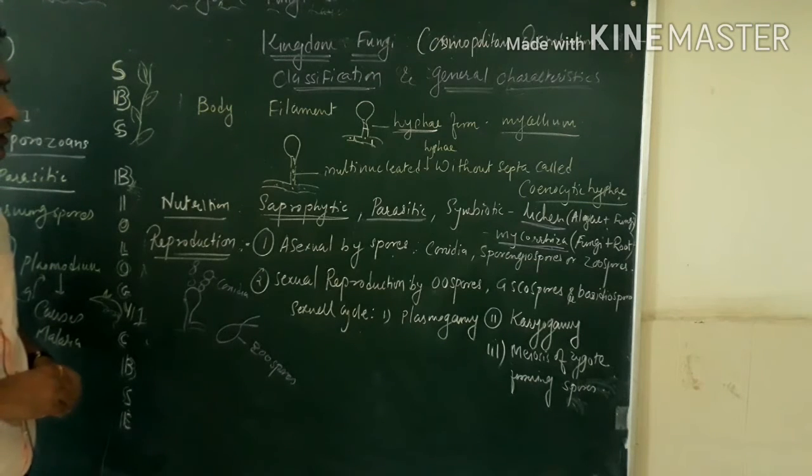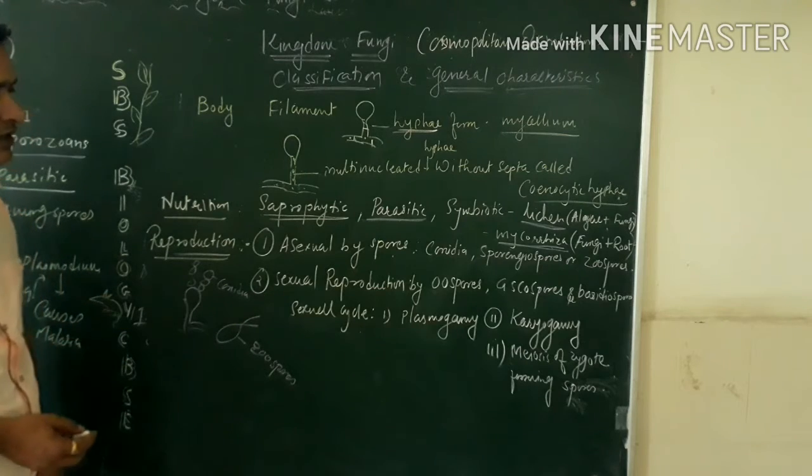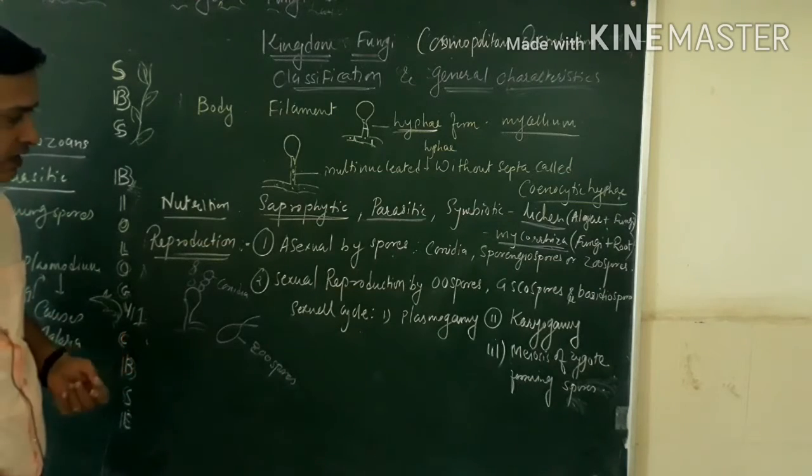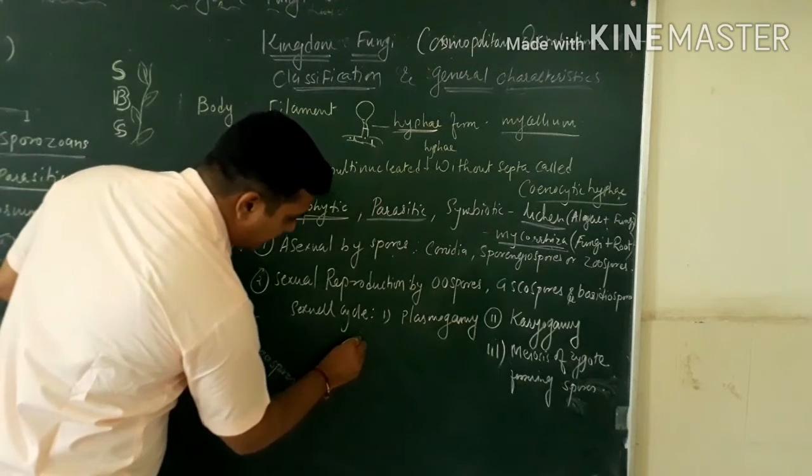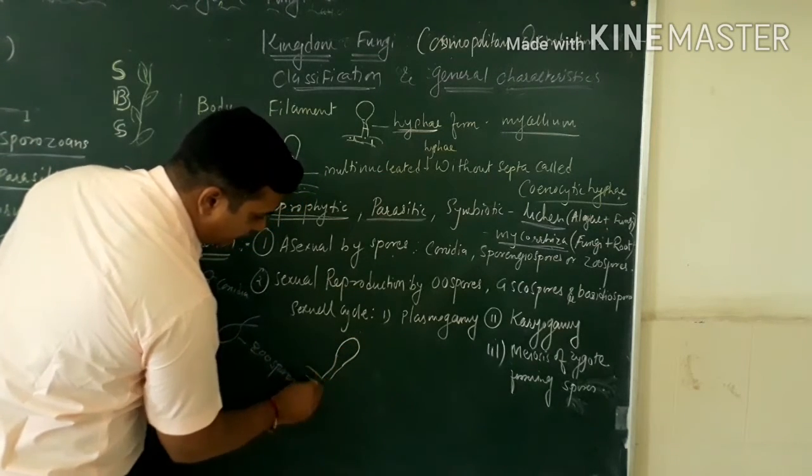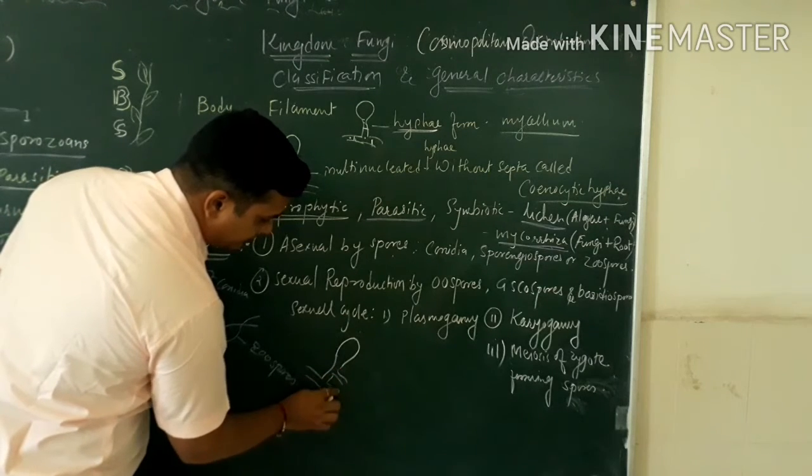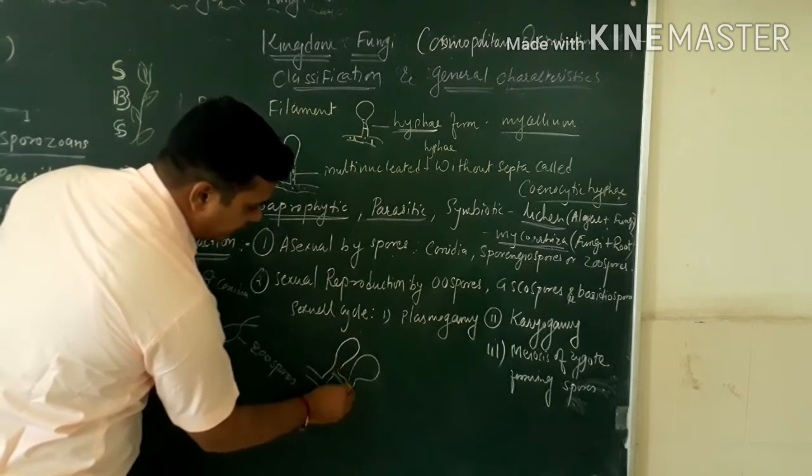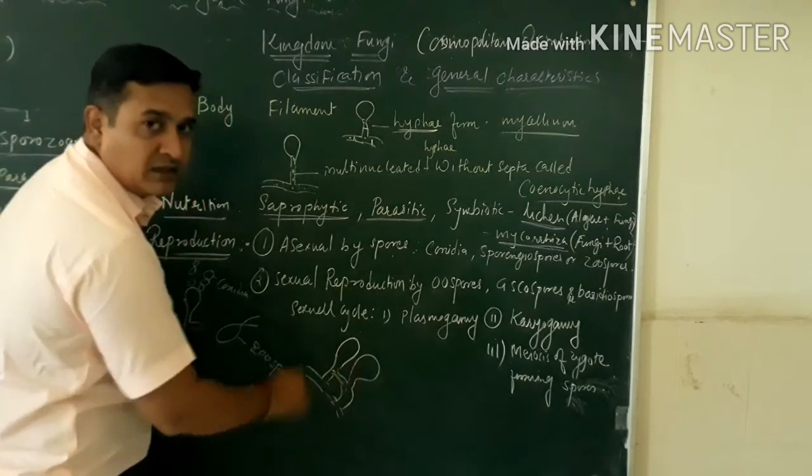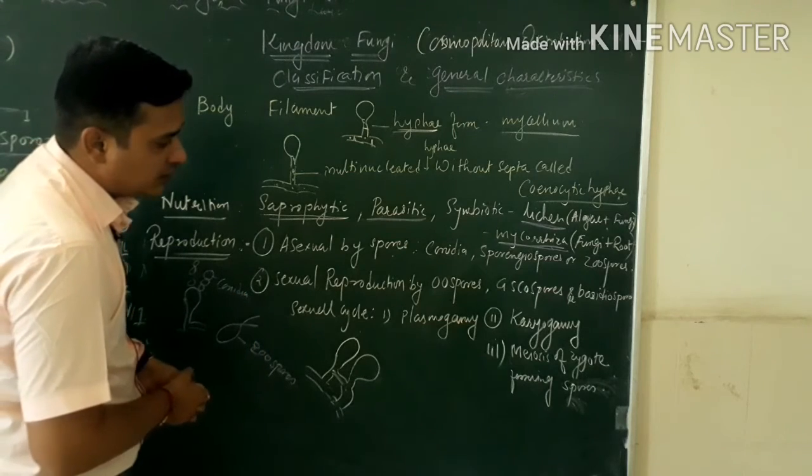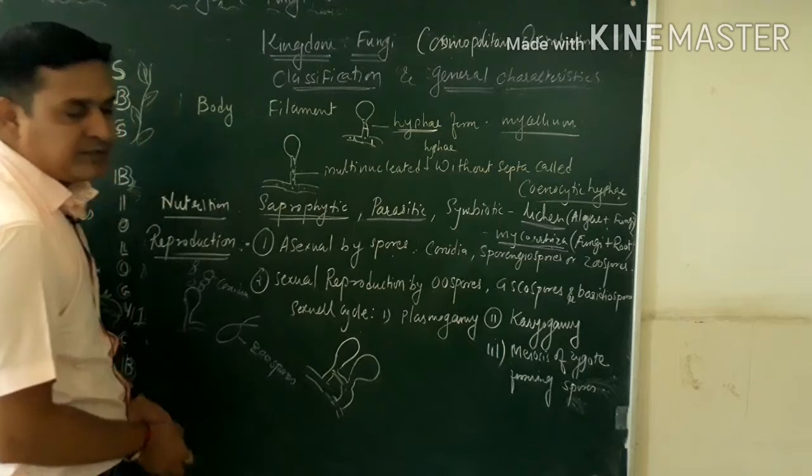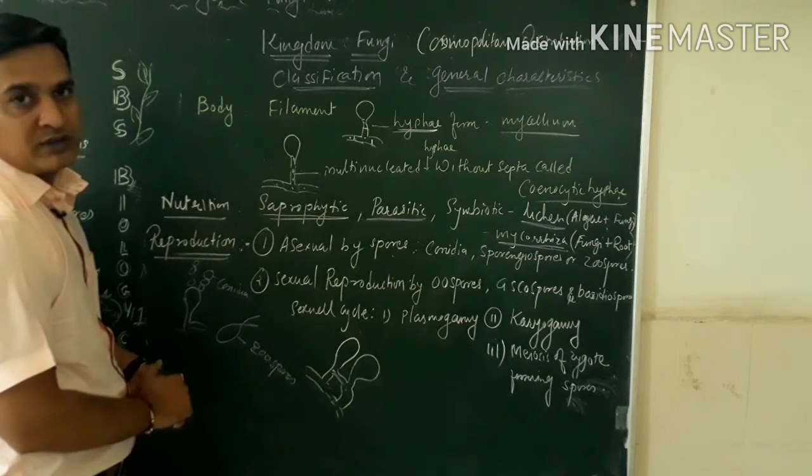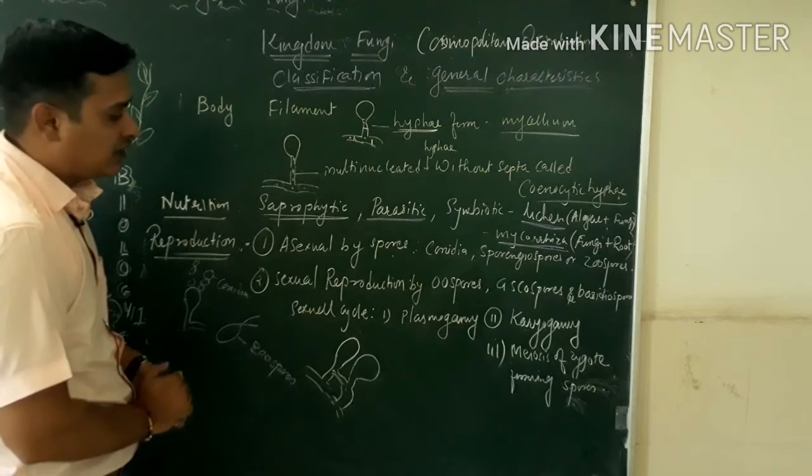And sexual reproduction occurs by oospores, fusion of two spores, ascospores, or basidiospores. It is occurring in three stages. Plasmogamy, plasmogamy is when two hyphae exchange their protoplasm. After protoplasm exchange they form karyogamy, they can be fused. And finally, hyphae can be separated and theoretically or meiotically they can be divided, forming the haploid sexual spores, and that way they flourish and form the fungus.